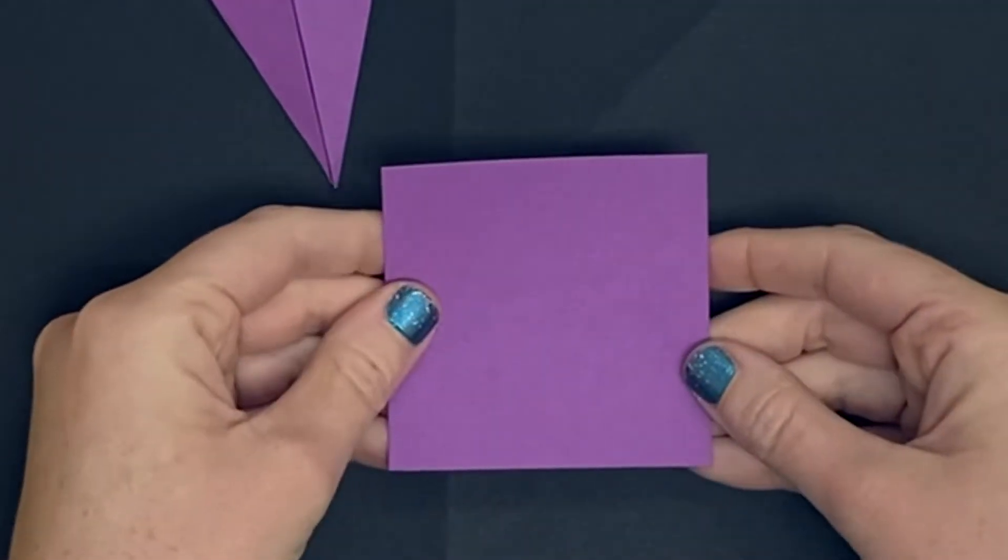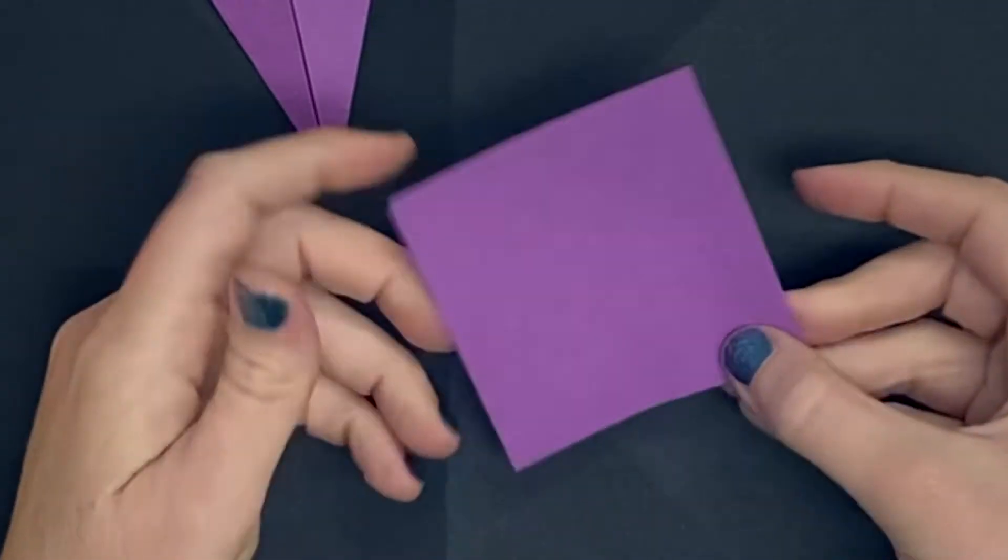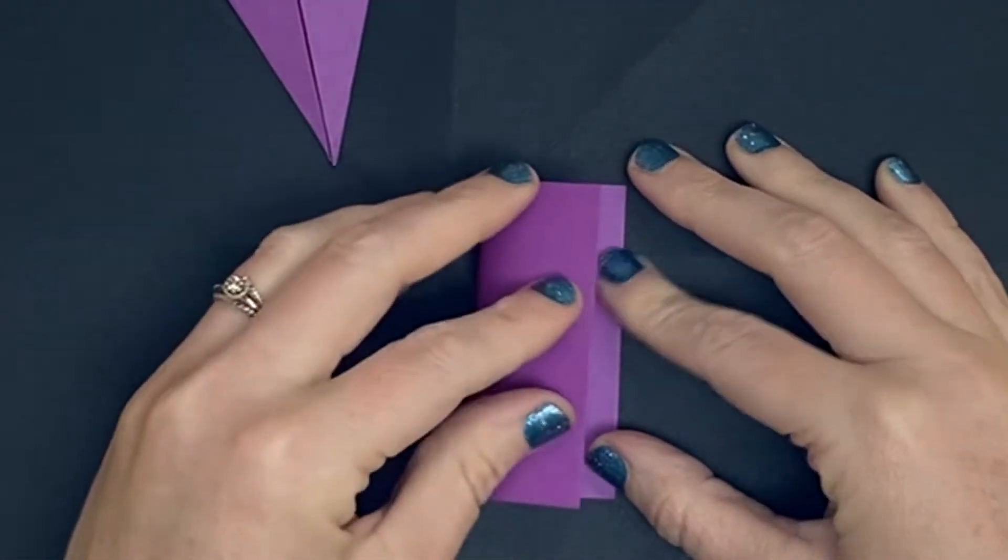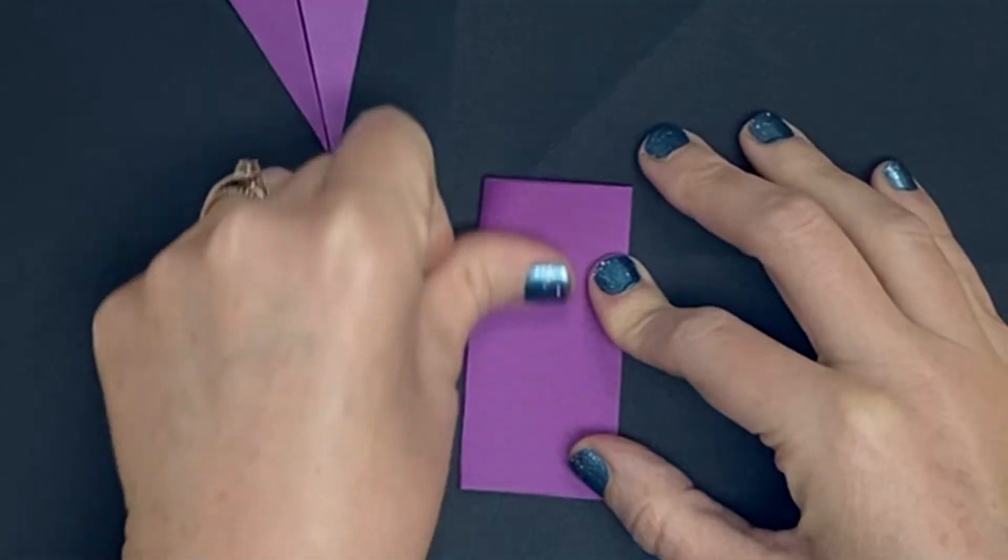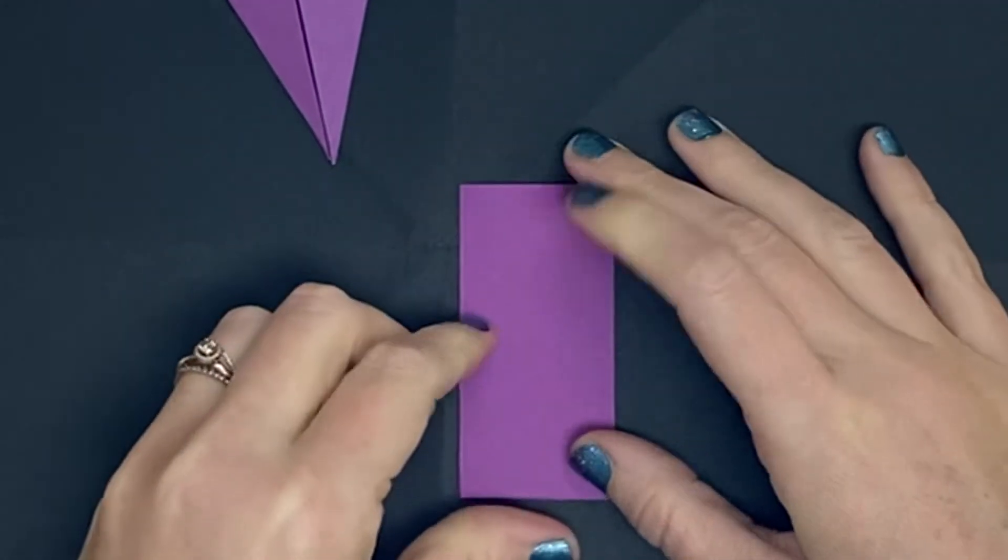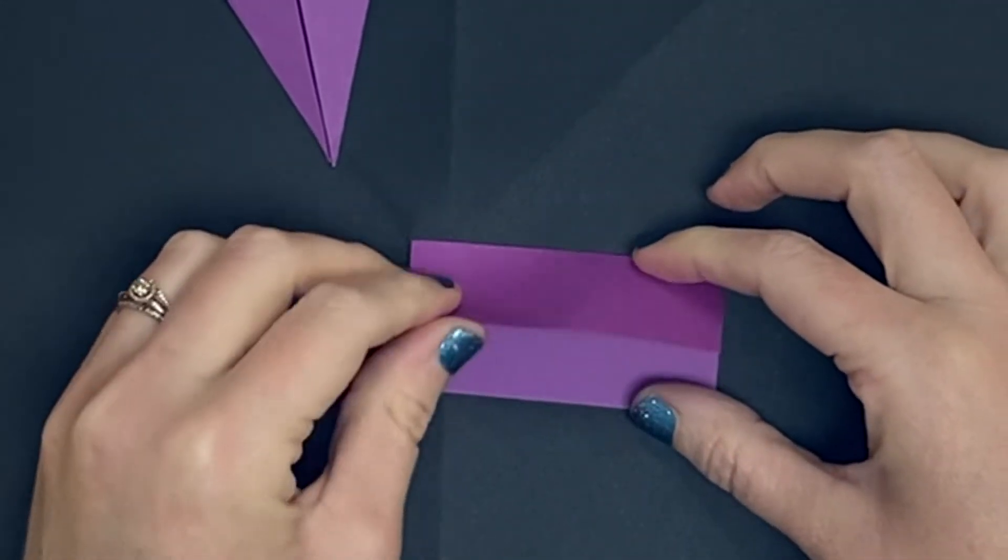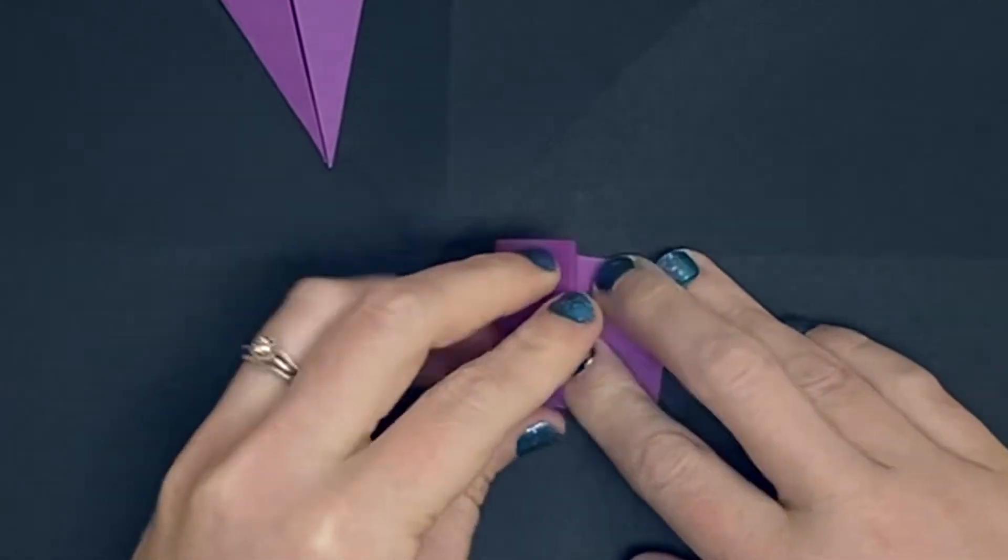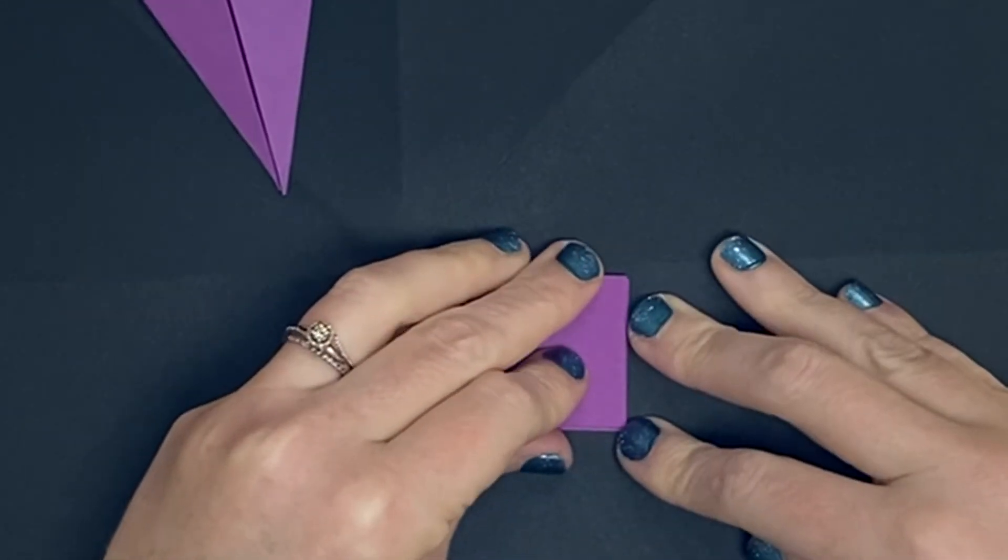The next fold we're going to see how to do is called the hat fold. You fold the paper into rectangles then without opening it up fold it again in half making it a square.